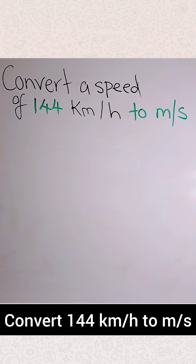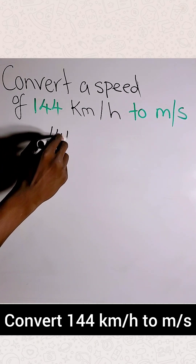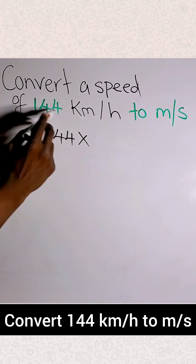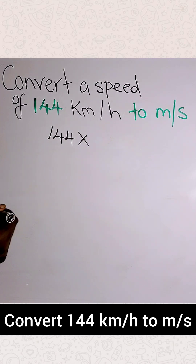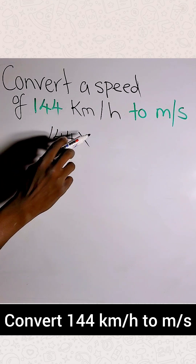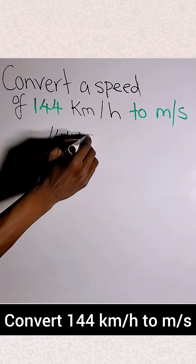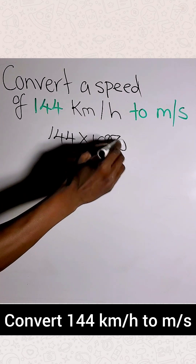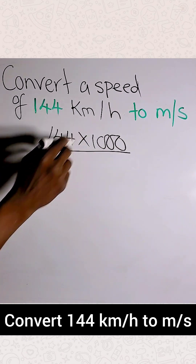Convert a speed of 144 kilometers per hour to meters per second. This is very simple. You write 144 — since this is in kilometers, converting to meters we multiply by 1000, as 1000 meters make a kilometer.